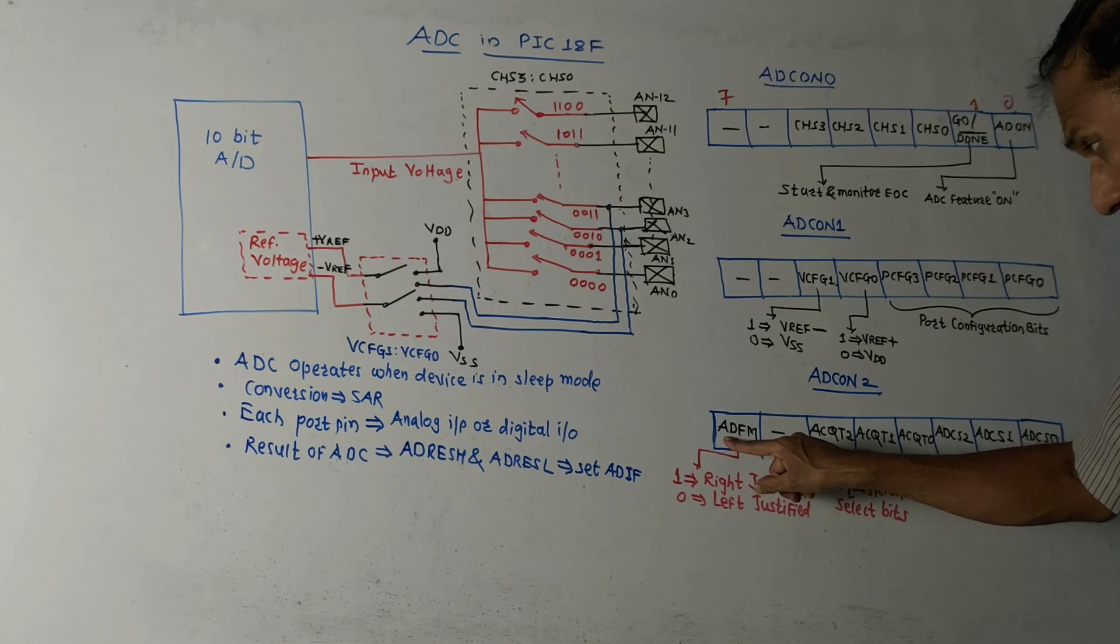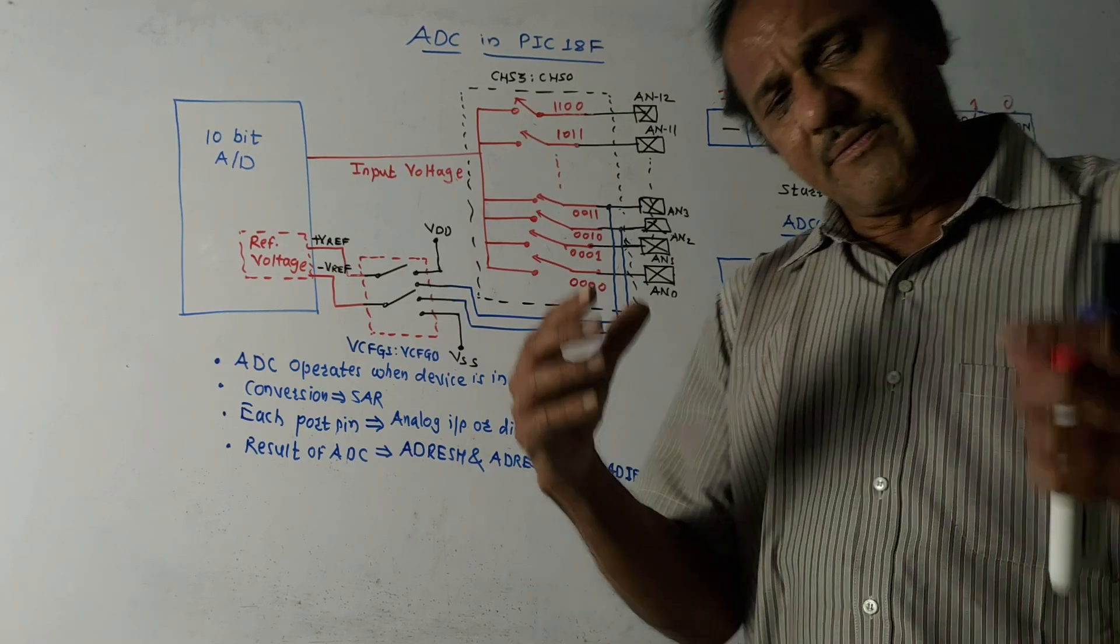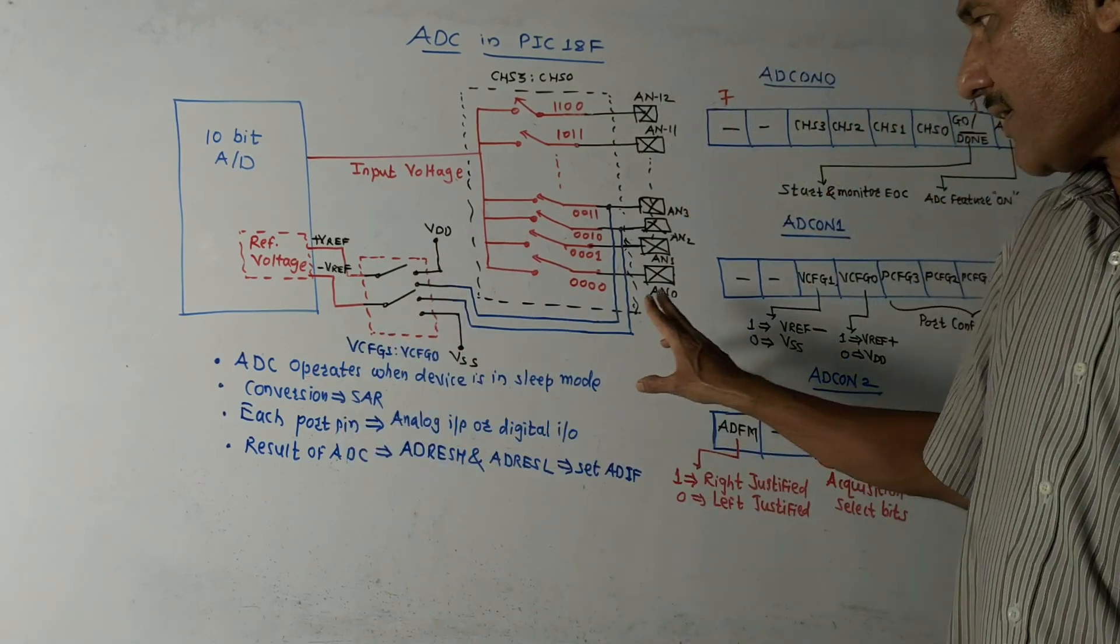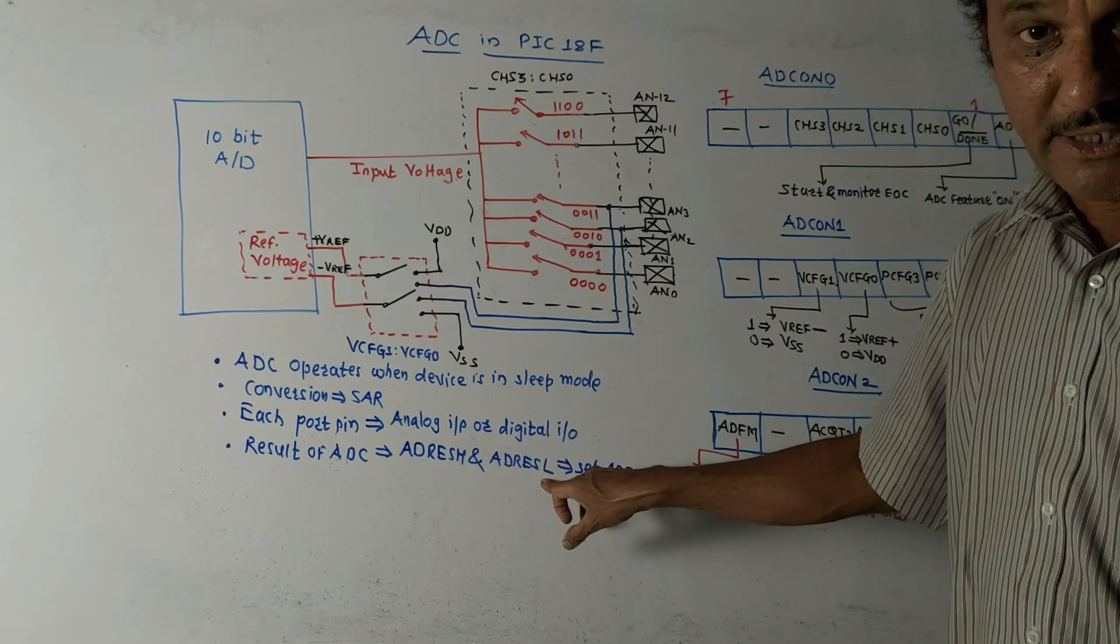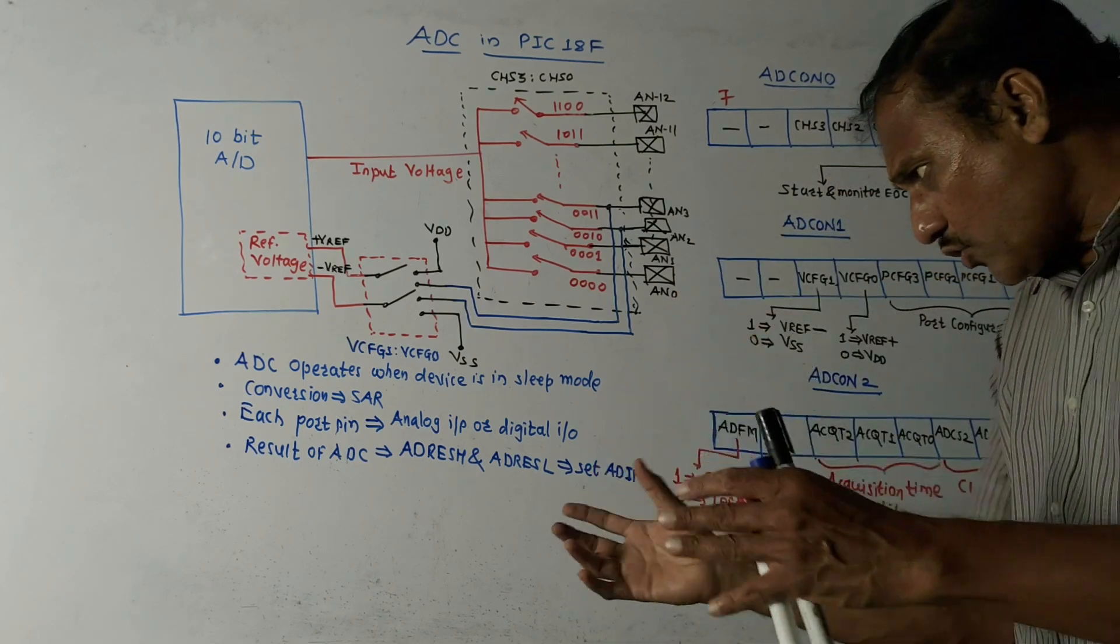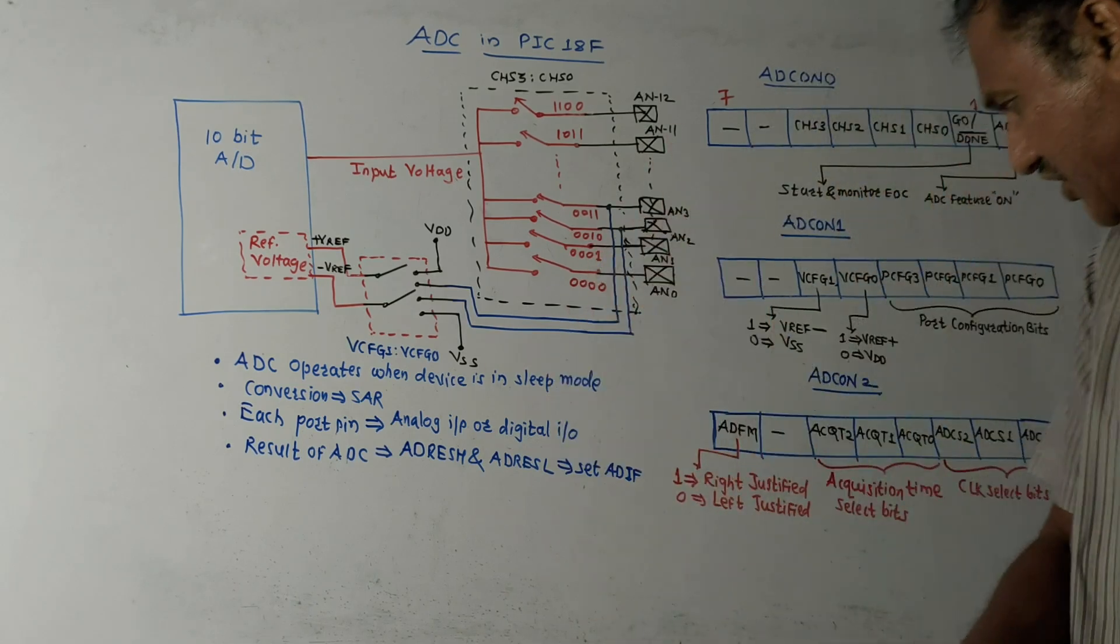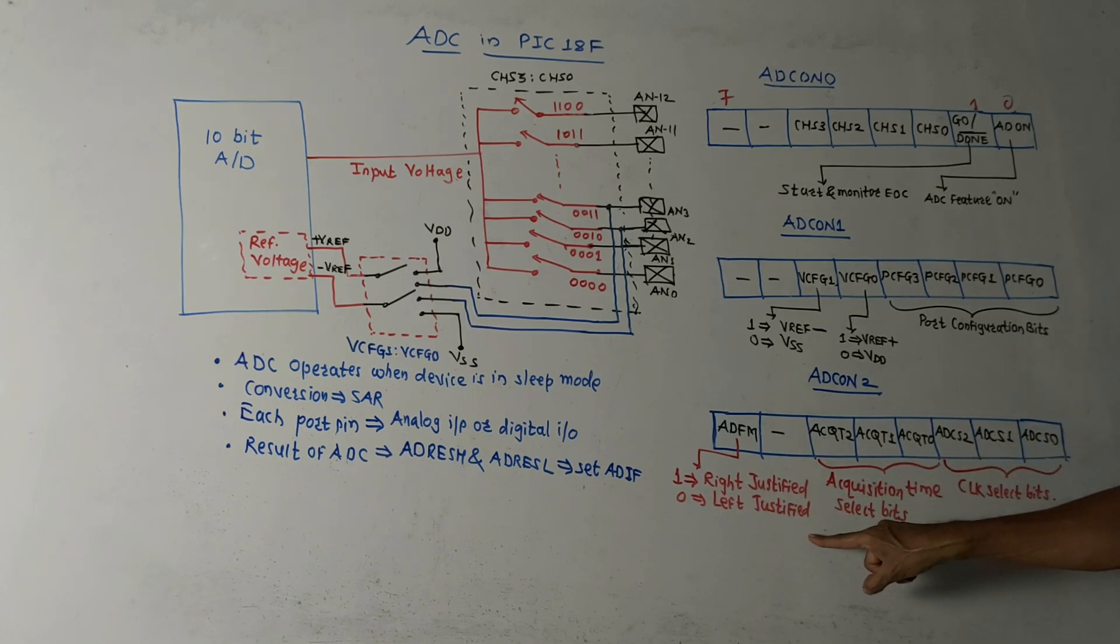So first bit, the seventh bit, is ADFM. You have an option: whenever the conversion is completed, you have to store the data in ADRESH and ADRESL registers, but you have an option. The data which is stored in these two registers can be right justified or left justified. So if this bit is 1, it indicates right justified. For 0, it indicates left justified.